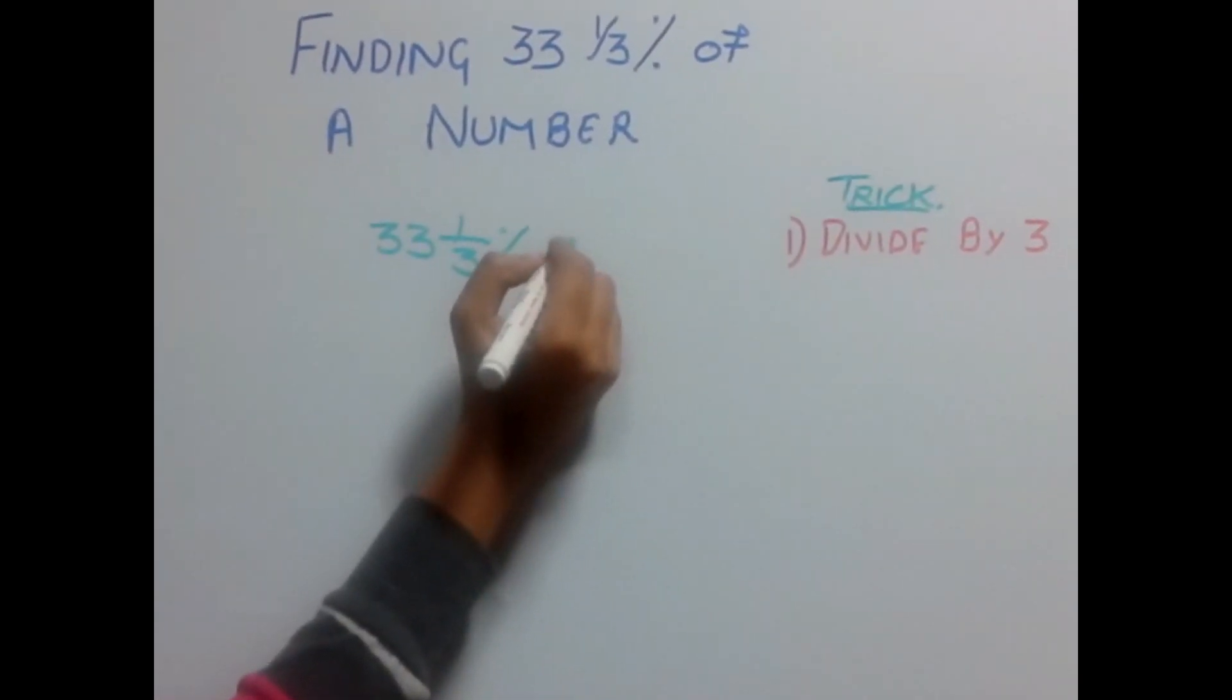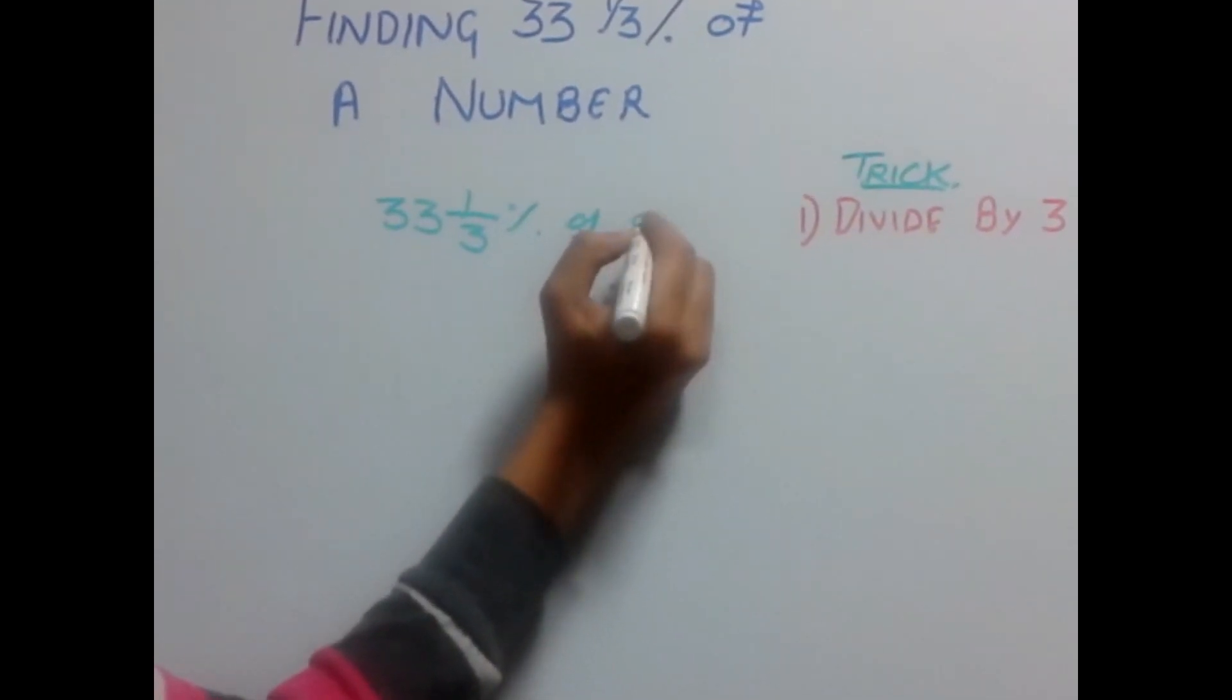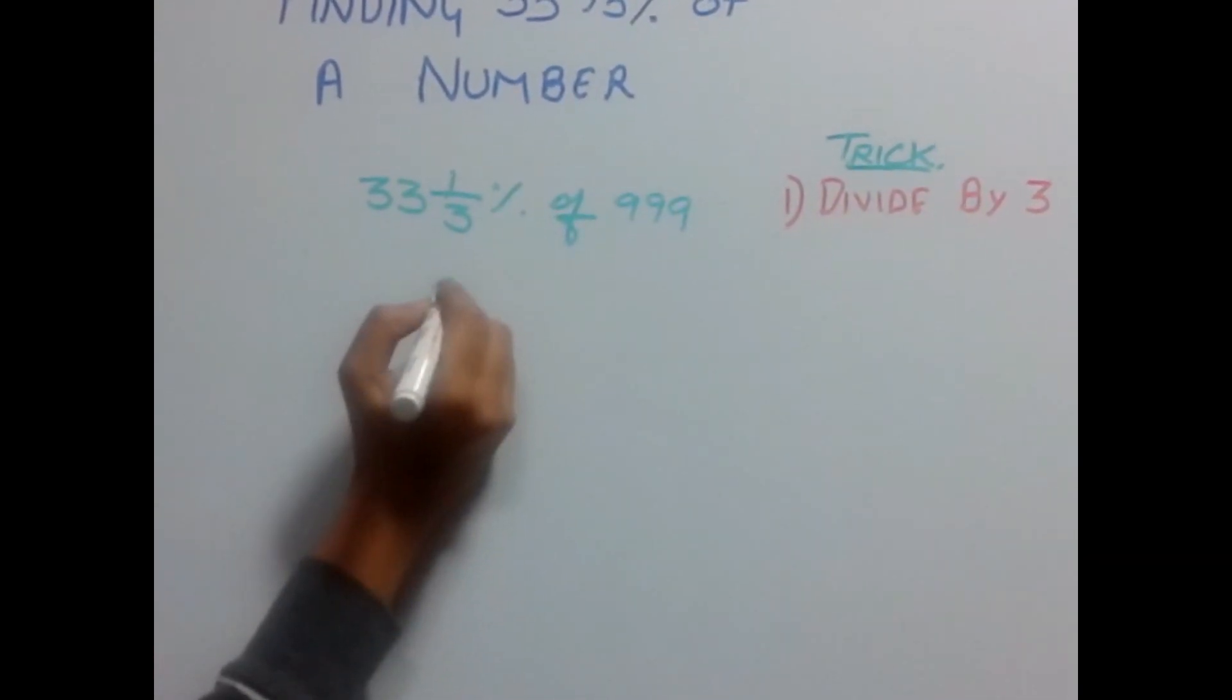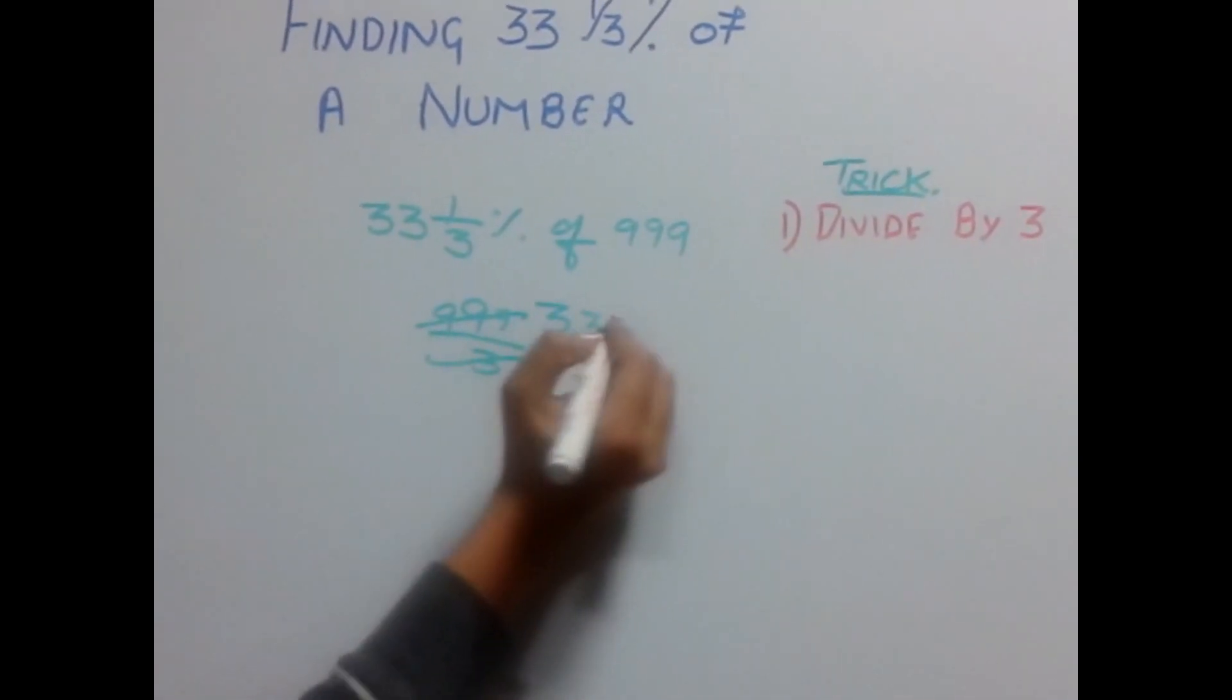33⅓% of 9999: just divide this number by 3, which gives you 3333 as the answer. Easy!